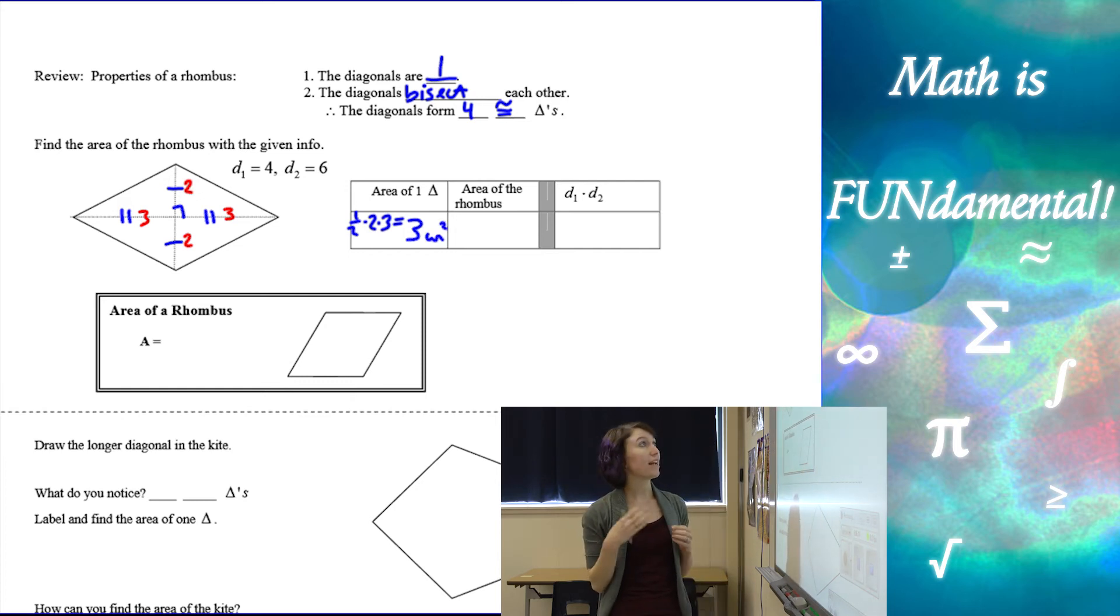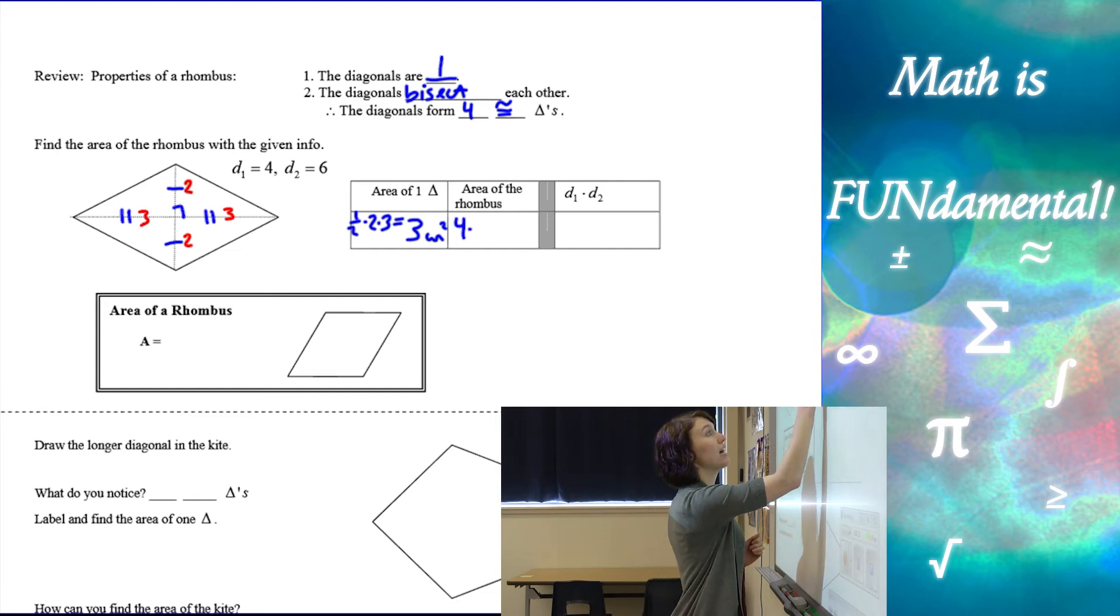All right, so now my area of the rhombus, if we look at this, is going to be four of those exact same congruent triangles. So if I take four times the area of each triangle, which was three, I get twelve units squared.